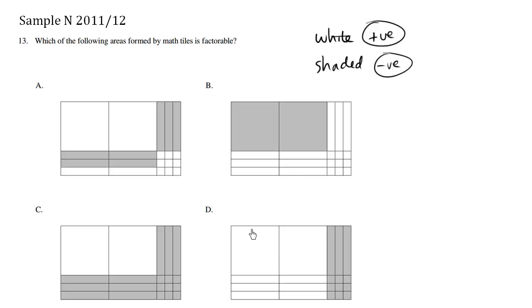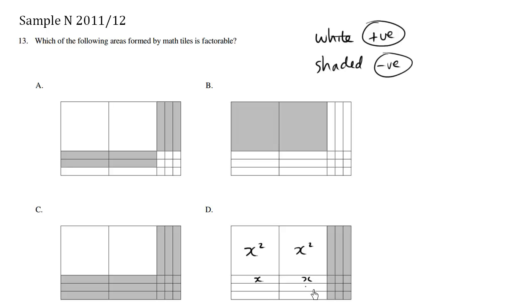These big squares represent x squared, whereas the nice lines — these long sticks — are considered x's. These are positive x's.